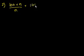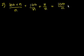Question 2. For which of the following values of n is 100 plus n over n not an integer? We could simplify this. This is the same thing as 100 over n plus n over n, which is equal to 100 over n plus 1.